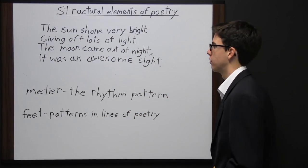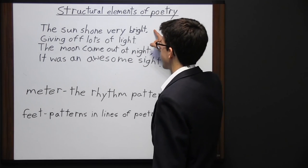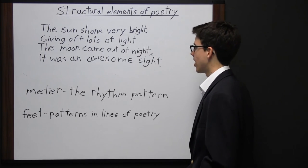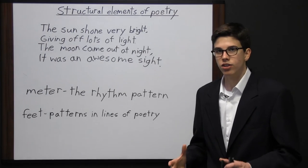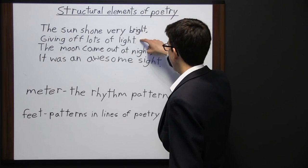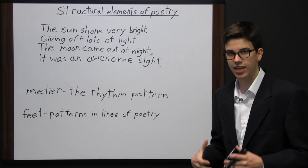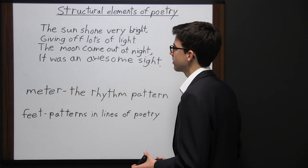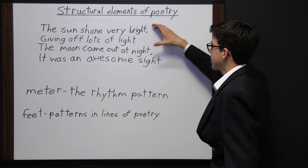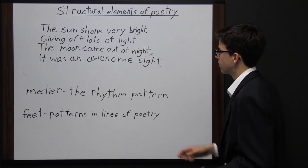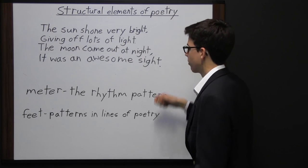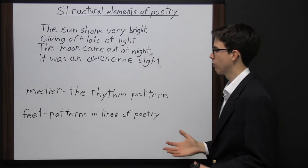We are going to take a look at some of the structural elements of poetry. This poem says: "The sun shone very bright, giving out lots of light. The moon came out at night. It was an awesome sight." Notice that the last word of each line rhymes — bright, light, night, and sight all have the same sound. Sometimes in a poem only the first line will rhyme with the third line and the second line will rhyme with the fourth line. In this case all the lines rhyme with each other. And so we also have meter, which is the rhythm pattern of a line of poetry, and feet, which are patterns in lines of poetry — specifically about which lines rhyme with each other.